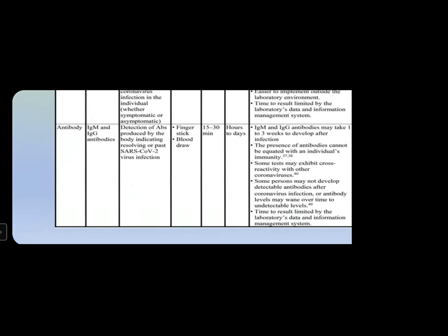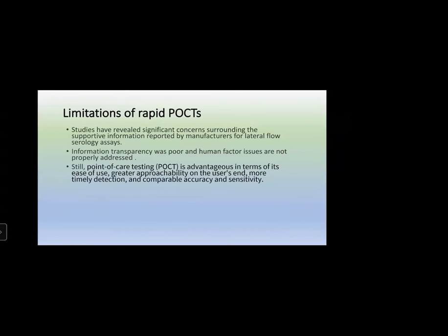Some tests may exhibit cross-reactivity to other coronaviruses. Studies have revealed significant concerns surrounding the information reported by manufacturers — they may hide some information. In the Covicell case, there is an app you should download to upload data to the government, but this part is often missing. Information transparency is poor and human factor issues are not properly addressed. Still, rapid POCTs are advantageous in terms of ease of use, better approachability, more timely detection, and comparable accuracy. Sensitivity is not that high, but specificity is almost as good as molecular tests.